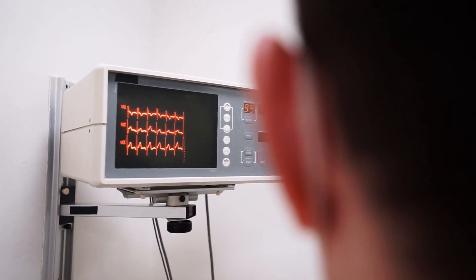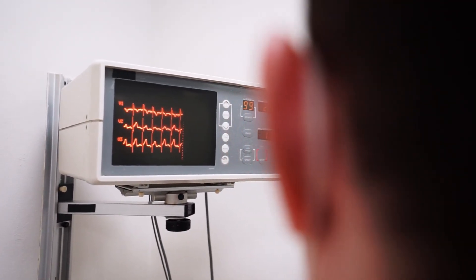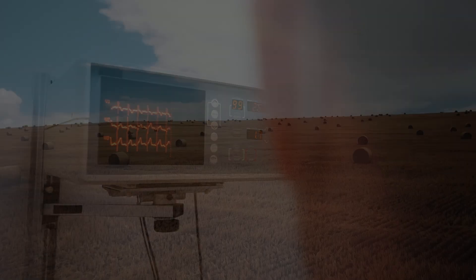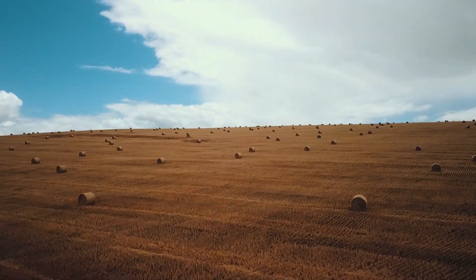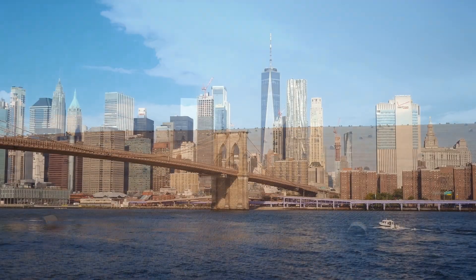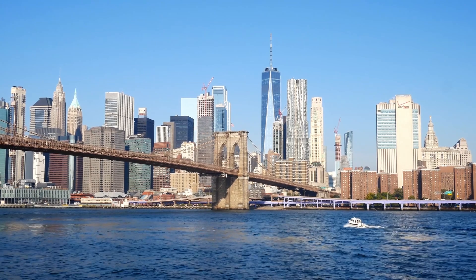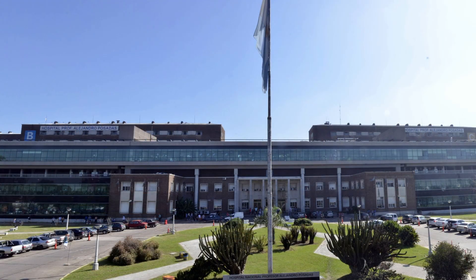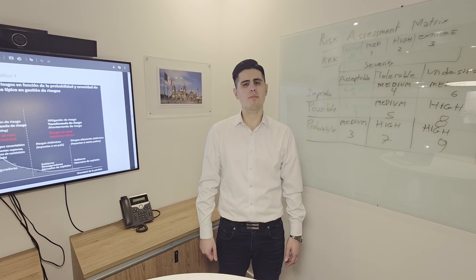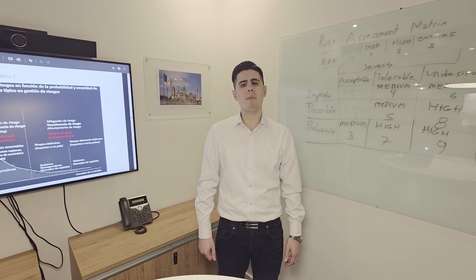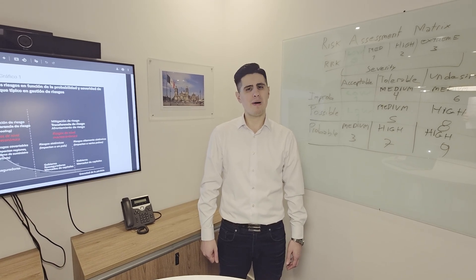Actuarial models are now used in agriculture to estimate crop failure, in finance to monitor liquidity, and in health systems to manage public risk. Each domain has different data, but the core challenge is the same: making uncertain outcomes manageable.